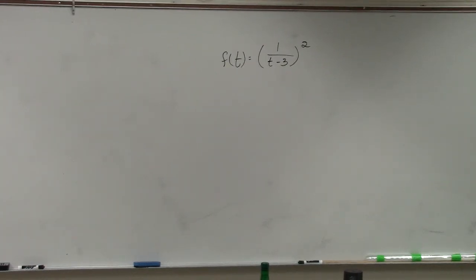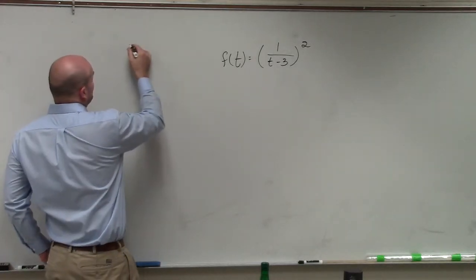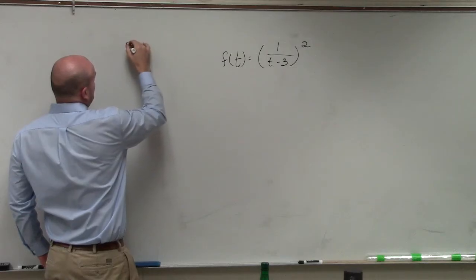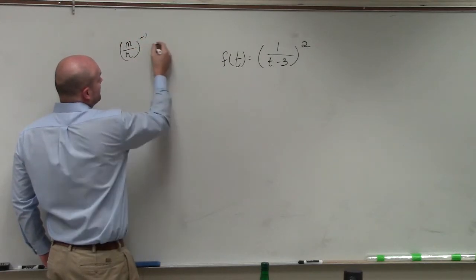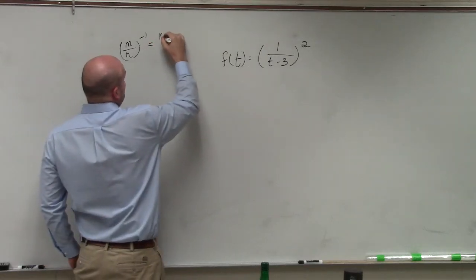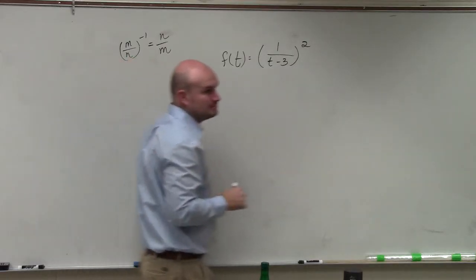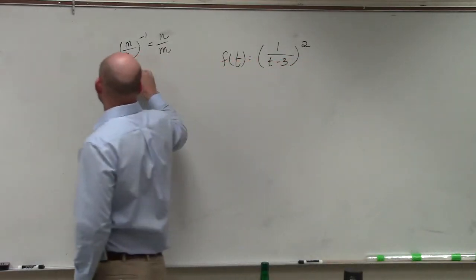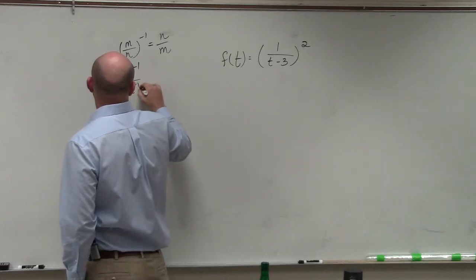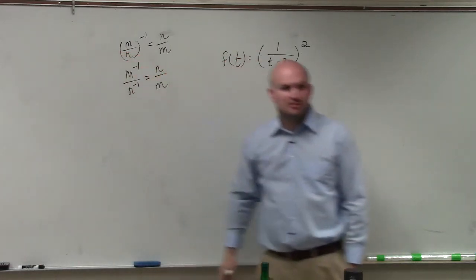So one thing we can do in this case is, if you guys remember, if I have a fraction m over n raised to the negative 1st power, that's the same thing as n over m, basically using the reciprocal. Because if you were to place this as m to the negative 1st, n to the negative 1st, then you would just reciprocate both of them.